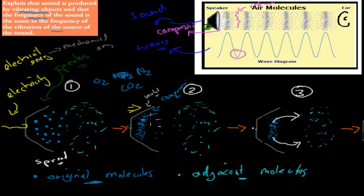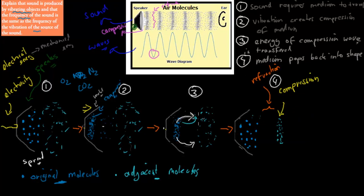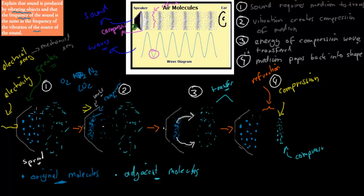The medium is now compressed in parts, and you can see some areas have fewer molecules — that will be the rarefaction part. In the next step, this compression moves in the direction of the adjacent molecules. Those adjacent molecules weren't affected by the first compression, but now they're going to move in the direction of the other particles and bump into them — and that's where the transfer of energy happens.